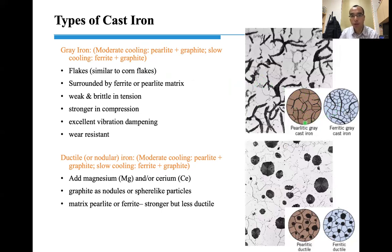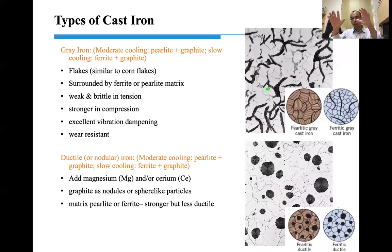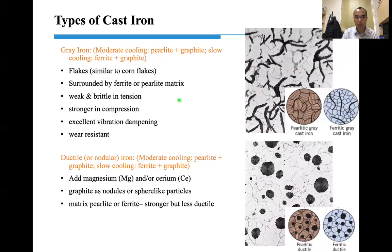The gray iron microstructure contains flake graphite surrounded by either ferrite or perlite depending on cooling rate. This microstructure is weak and brittle — the needle-like graphite flakes cause stress concentration under load. However, gray iron has really good vibration damping capability. That's why machine bases, like in a lathe, are made of gray iron.